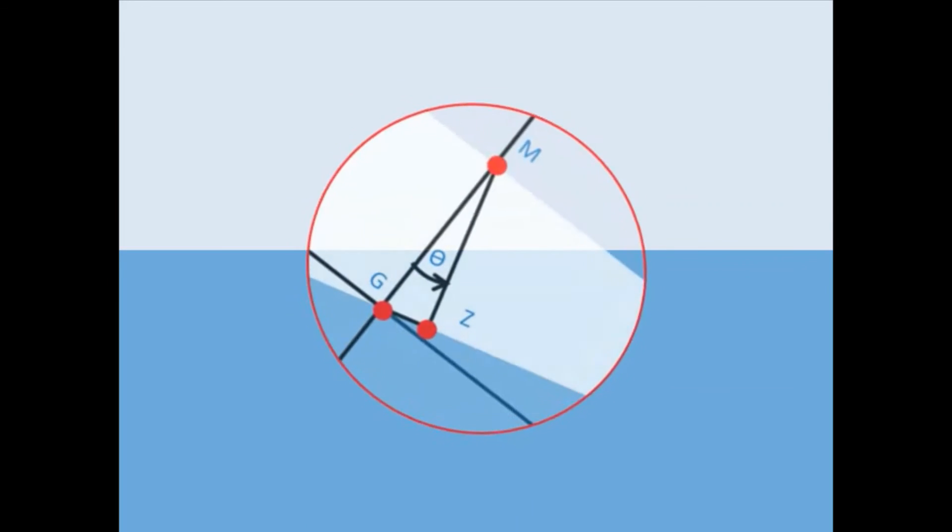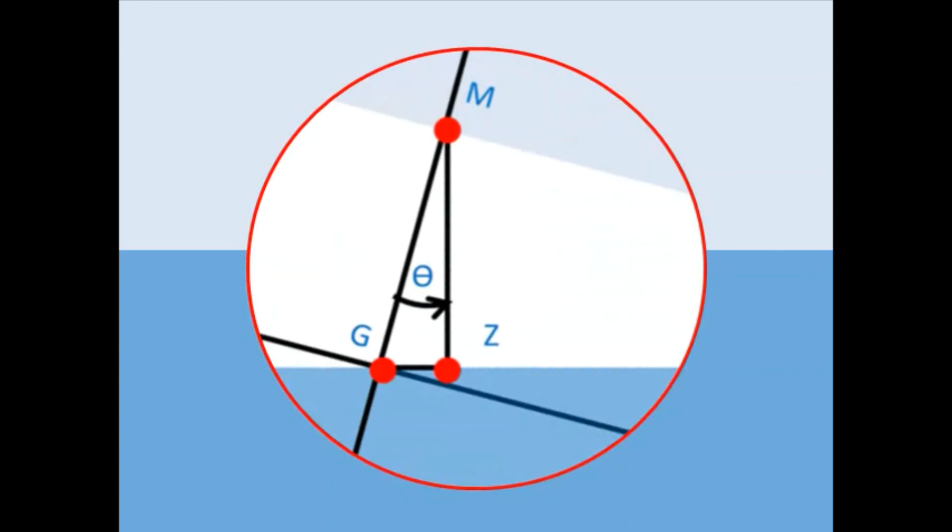By using the sine formula, sine theta is equal to GZ divided by GM. GZ is equal to GM multiplied by sine theta.